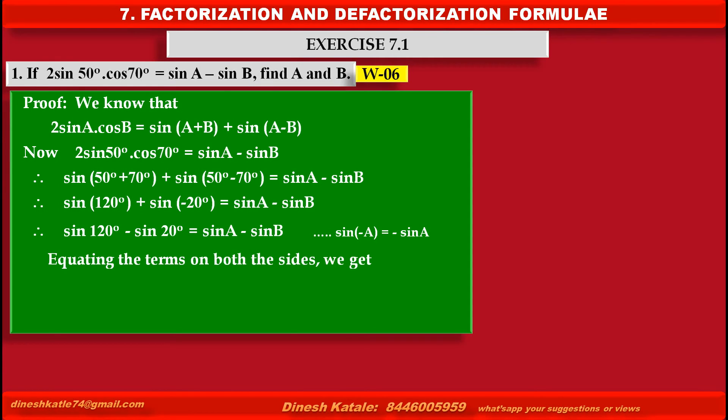Equating the terms on both sides, we get sin 120° equals sin A and sin 20° equals sin B. Therefore, A equals 120° and B equals 20°.